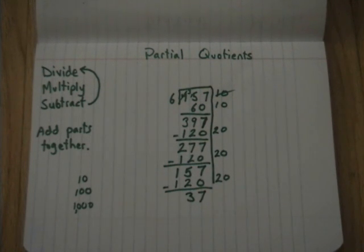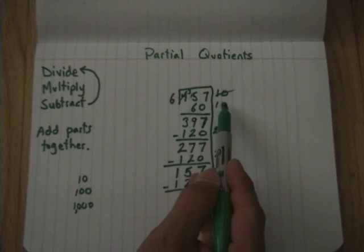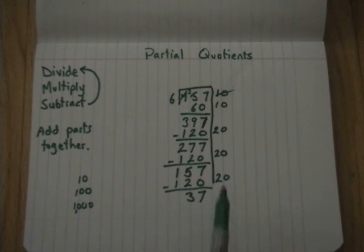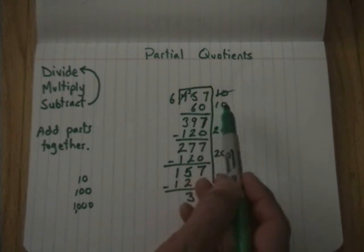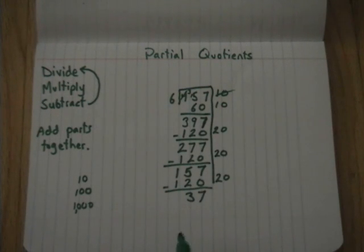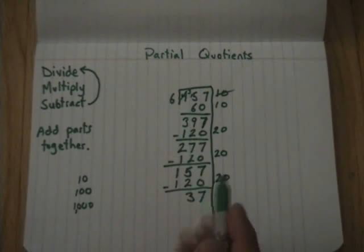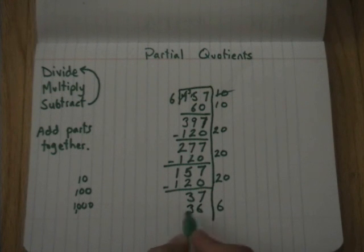Again, the reason this is called partial quotients is because I just did 10 groups of 6, 20 groups of 6, 20 groups of 6 again, 20 groups of 6 again. And so these are all parts of my quotient. I'm dealing with them in little pieces. And then at the end, I'm going to put them all back together. So again, I'm going to extend this line down a little bit. And I know that, again, you want to know your multiplication facts. 5 times 6 is 30. 6 times 6 is 36. If I go any more than that, if I go 7 times 6, it's 42. And that's higher. So that would be a problem. So I'm going to do 6. There's my divide step again. 6 times 6 is 36. That's the multiply. I'm going to subtract and get 1. So I know my remainder is 1.